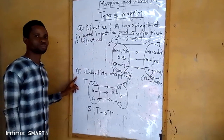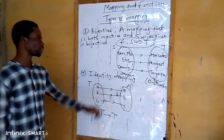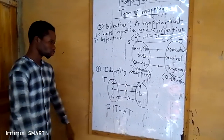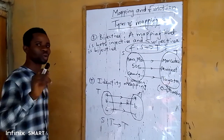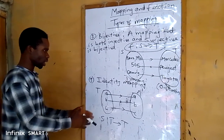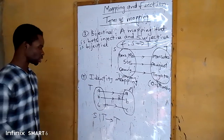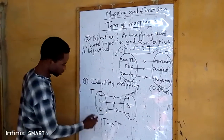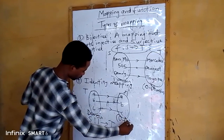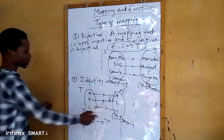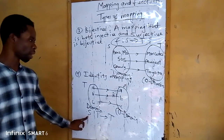Now, looking at this fourth type of mapping diagram, this one is called identity mapping. Anytime you have a mapping diagram, you look at the domain and co-domain. When the elements in the domain and the elements in the co-domain are the same thing, we call it identity mapping. So if you look at the elements in the domain and the elements in the co-domain here, they are the same thing — that is why we refer to this one as identity mapping.